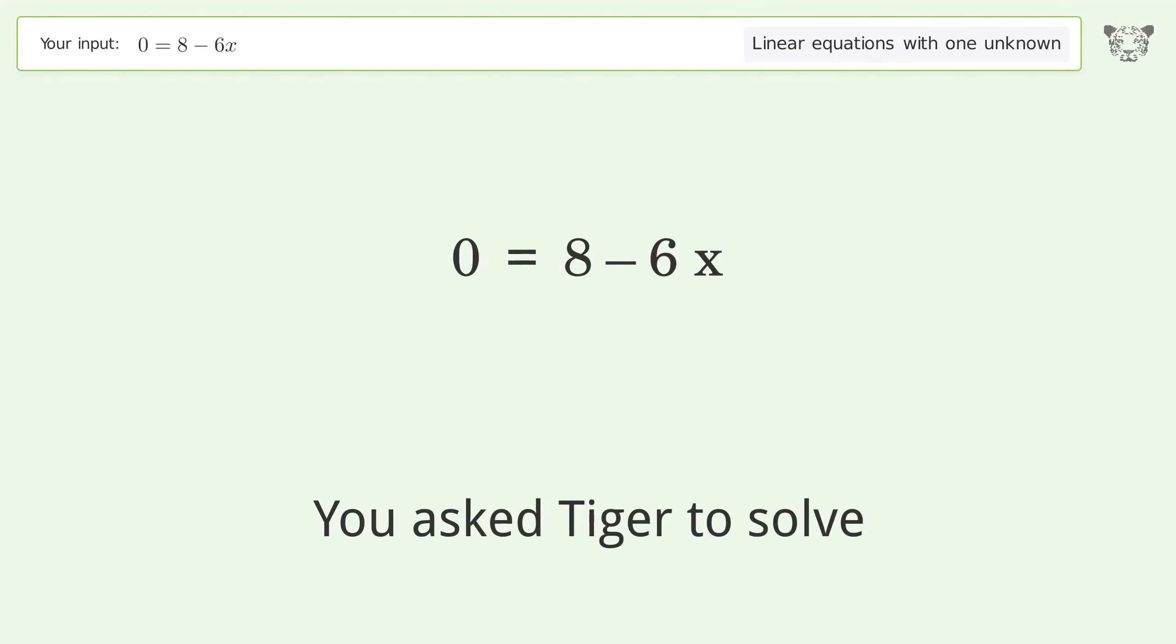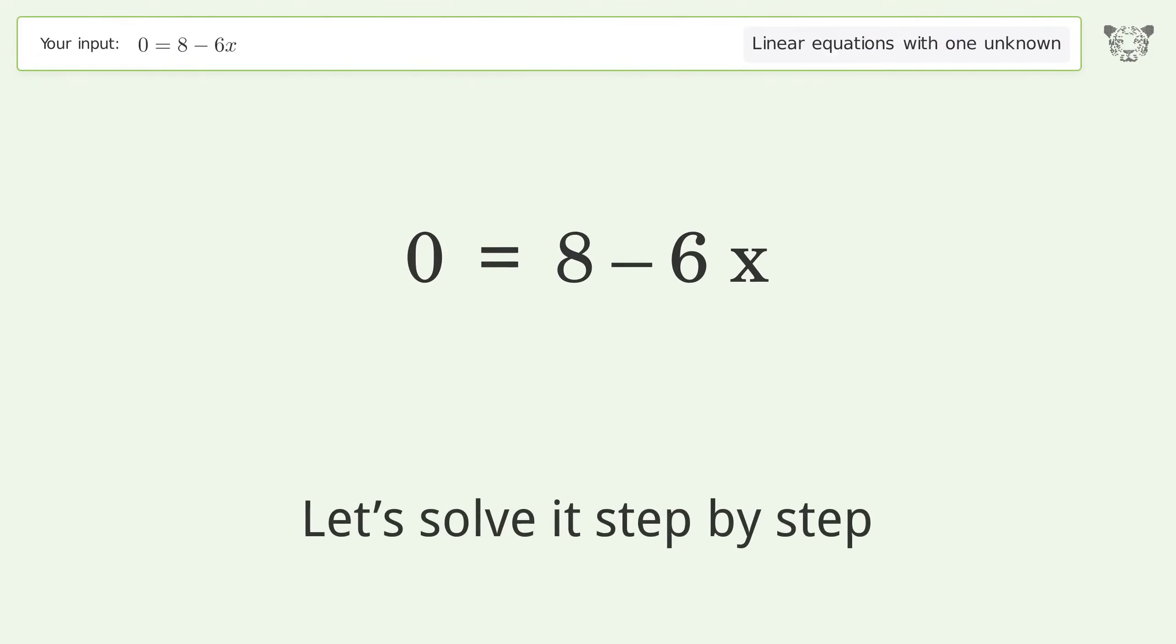You asked to solve this linear equation with one unknown. The final result is x equals 4 over 3. Let's solve it step by step. Swap sides.